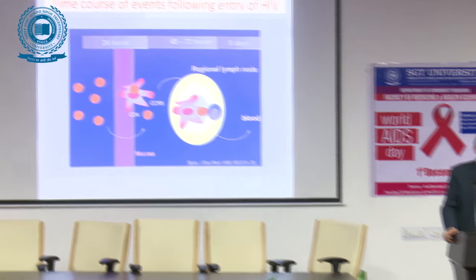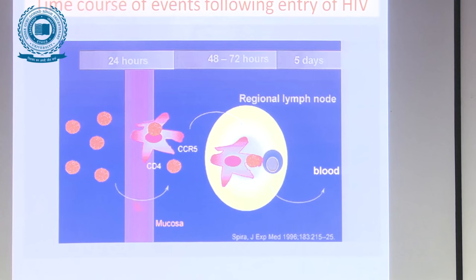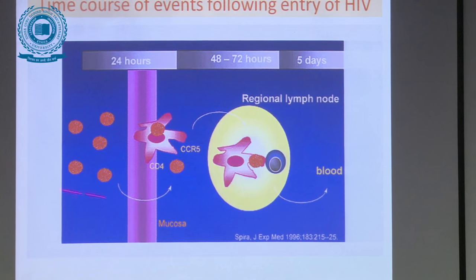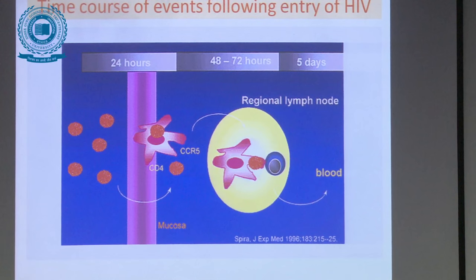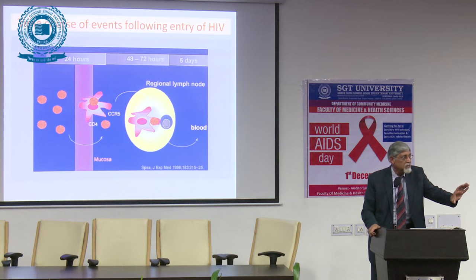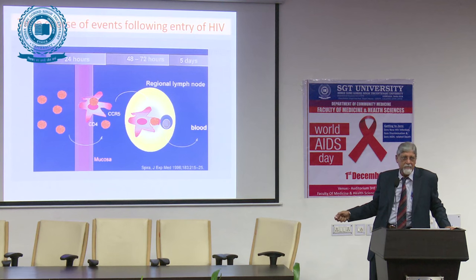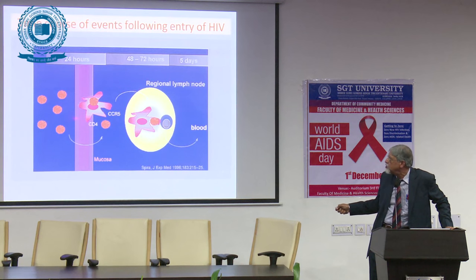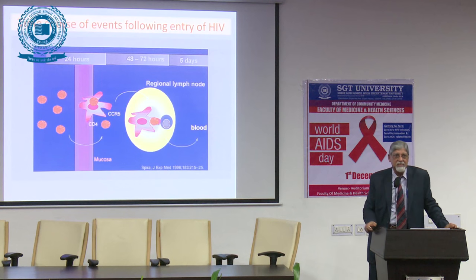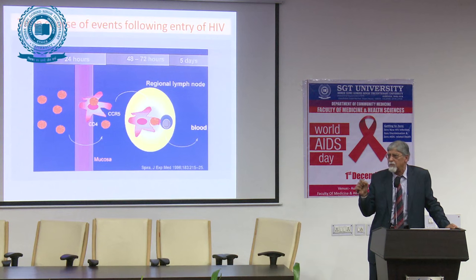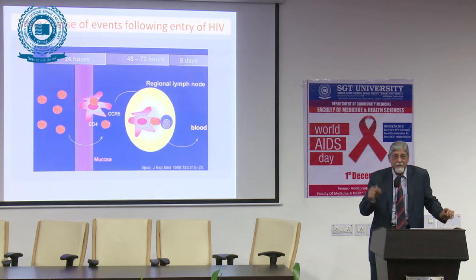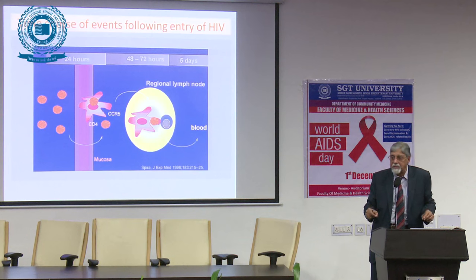After entry of the virus, it remains within the mucosa for about one day. It takes two to three days to migrate to the regional lymph node, and by approximately day five it enters the bloodstream. So we have ample time. If we intervene at this mucosal stage, the virus may not cross to the regional lymph node — that is the logic for giving post-exposure prophylaxis as early as possible, preferably within two hours.